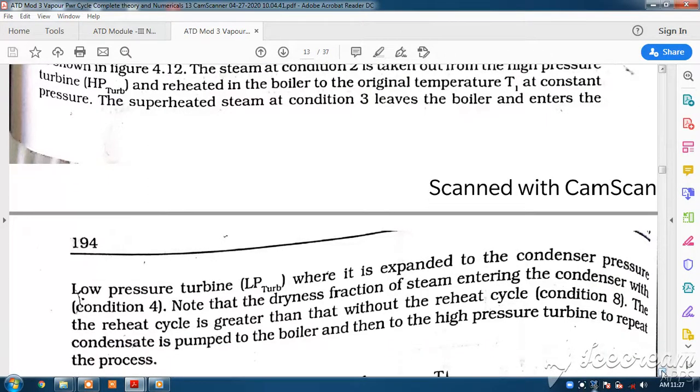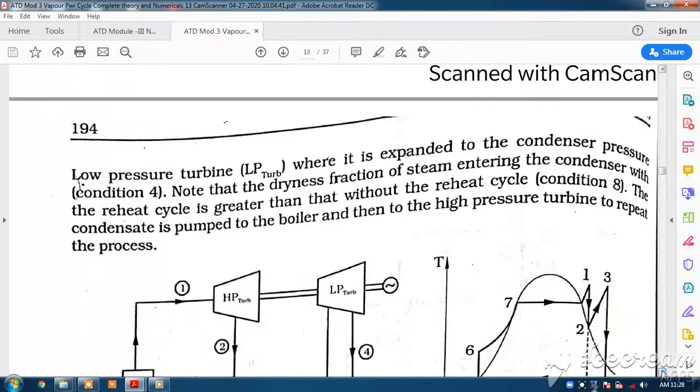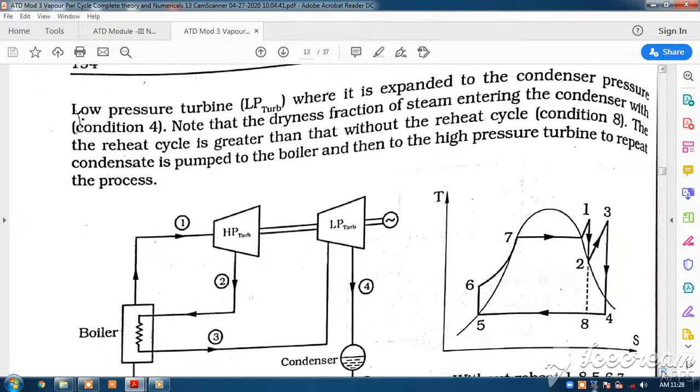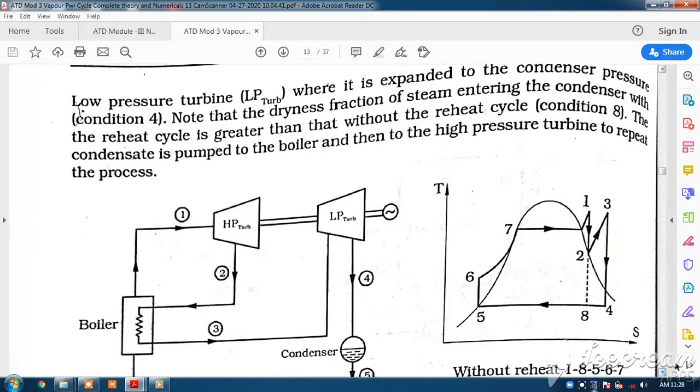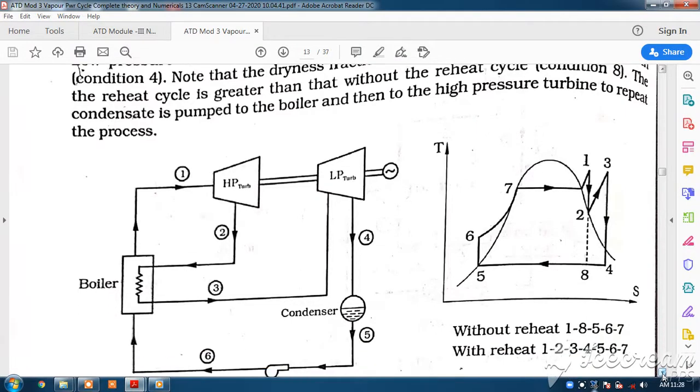The superheated steam at condition 3 leaves the boiler and enters the low pressure turbine where it is expanded to the condenser pressure condition 4. Note that the dryness fraction of steam entering the condenser with the reheat cycle is greater than that without the reheat, that is condition 8. The condensate is pumped to the boiler and brought to the high pressure turbine to repeat the process.